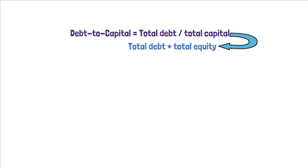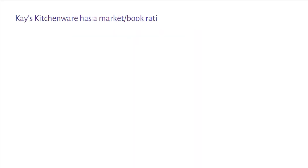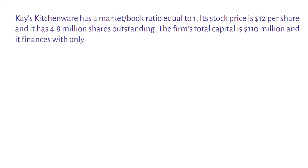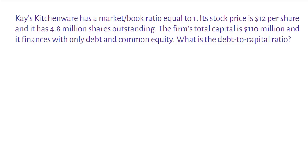Case Kitchenware has a market to book ratio equal to 1. Its stock price is $12 per share and it has 4.8 million shares outstanding. The firm's total capital is $110 million and it finances with only debt and common equity. What is the debt to capital ratio?